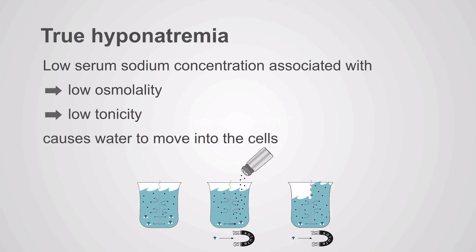True hyponatremia is when you have a low serum sodium concentration associated with low osmolality and low tonicity. This causes water to move into the cells, shifting into the relatively hypertonic intracellular compartment. Water shifts into the cells and causes them to stretch, and that will cause symptoms.